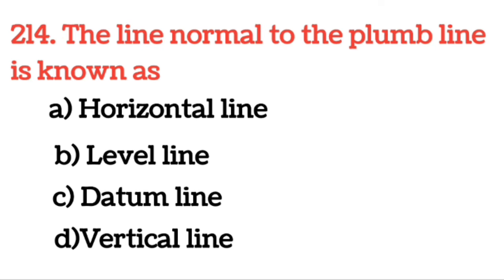Next question: The line normal to the plumb line is known as the level line. जो line plumb line के normal होता है उस line को level line बोला जाता है।